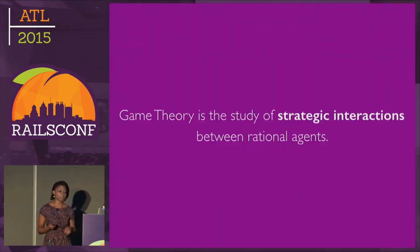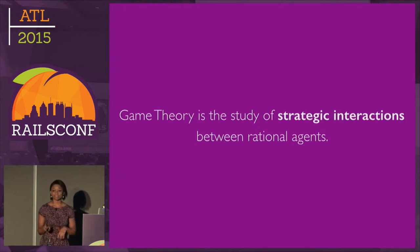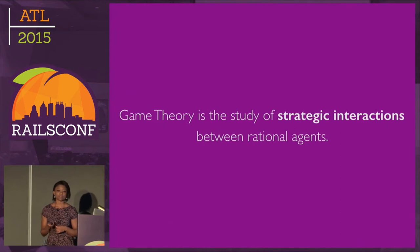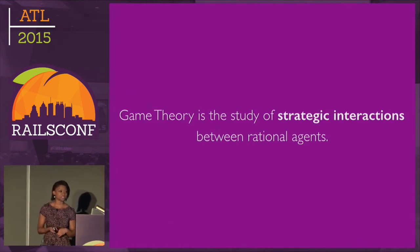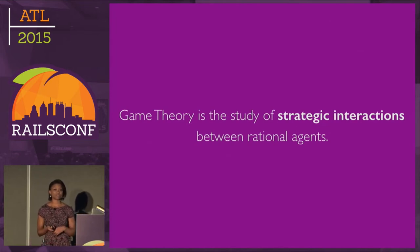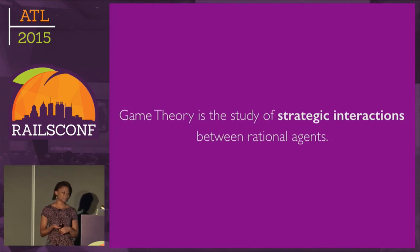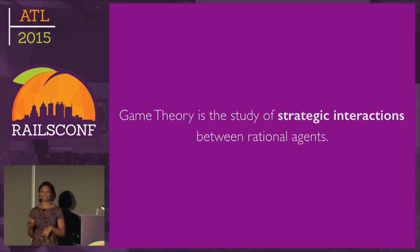Game theory is the study of strategic interactions between rational agents. Applications include economics, politics, biology, and computer science. It was developed by John von Neumann and Oscar Morgenstern in the 1940s, with many other scholars developing it extensively in the 1950s onwards. It applies through a wide range of games and interactions, and you typically see it applied to behavioural scenarios, like the opening story. Despite its breadth, all games, no matter how complex, have some basic components.